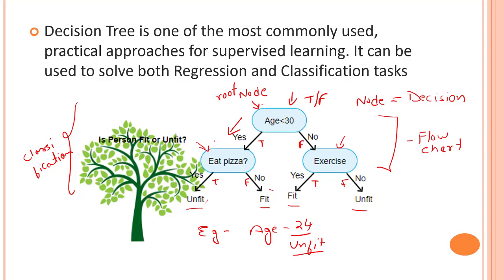The final prediction is the average of the value of the dependent variable in that particular leaf node. Through multiple iterations the tree is able to predict a proper value for a data point. When we pass a dataset into a decision tree algorithm, it builds a flowchart internally. When you pass in new test data with, say, three values, it checks each value against the nodes to find the leaf node — that is basically how the decision tree works.